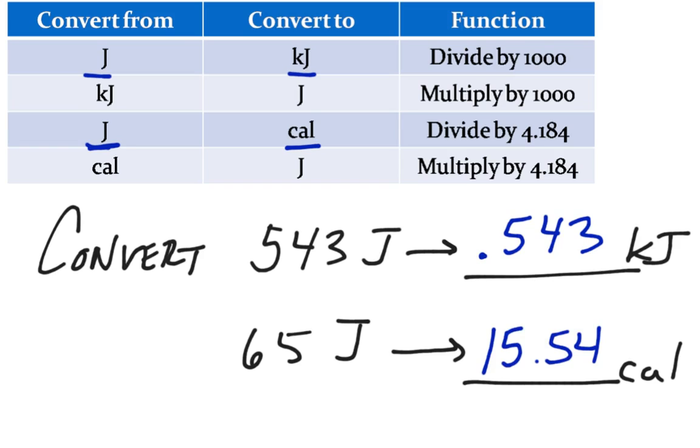It's important to understand that a calorie, a little c calorie, is the amount of heat energy required to raise one gram of water by one degree Celsius. This is not a food calorie. A food calorie is 1,000 of these. Part of the reason is probably to eliminate those very big numbers on food packages.